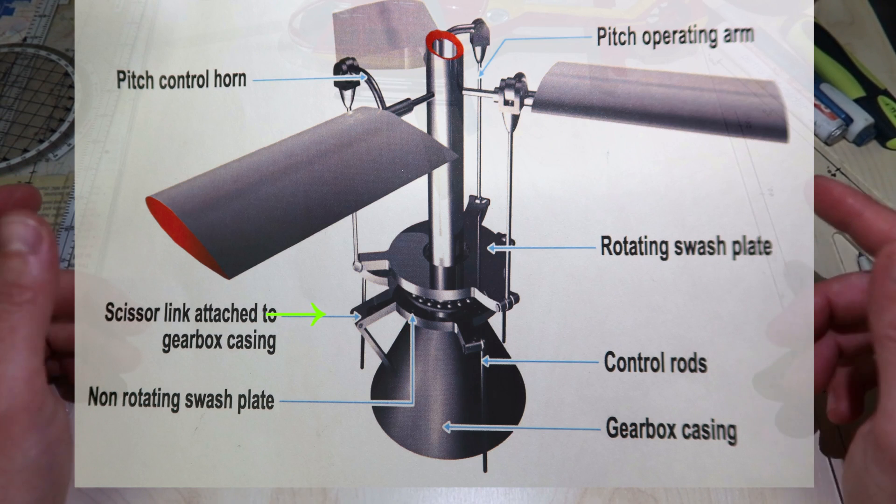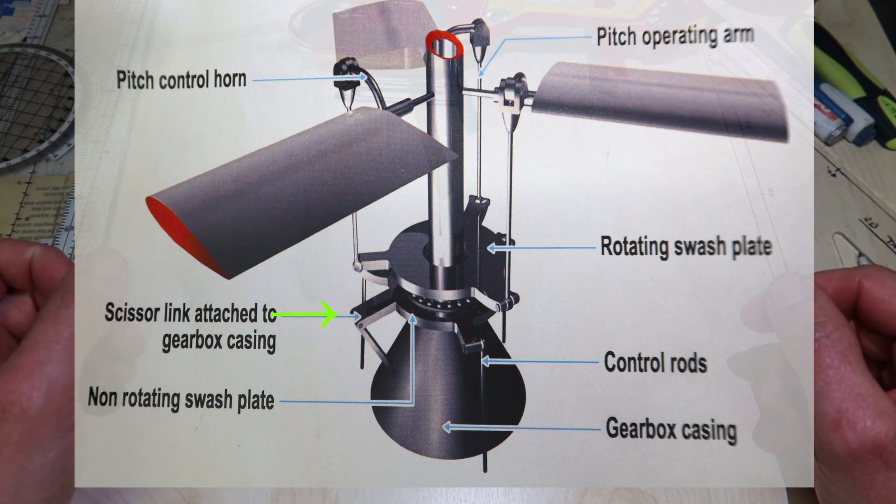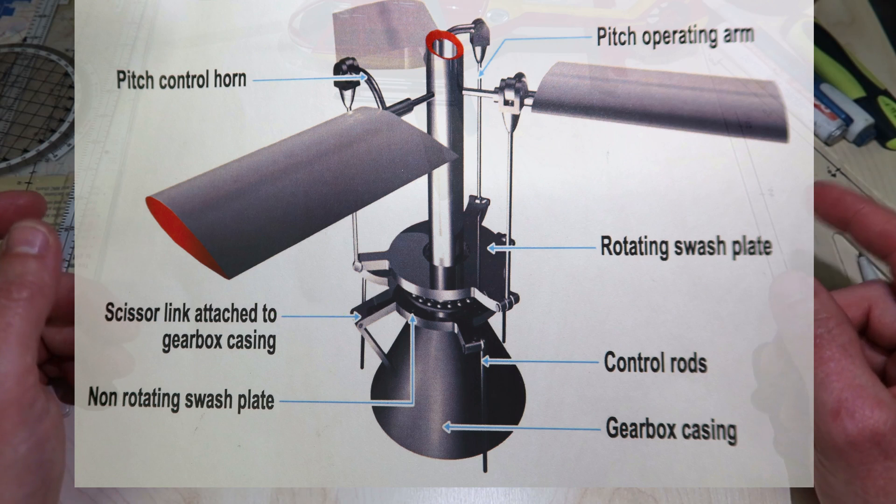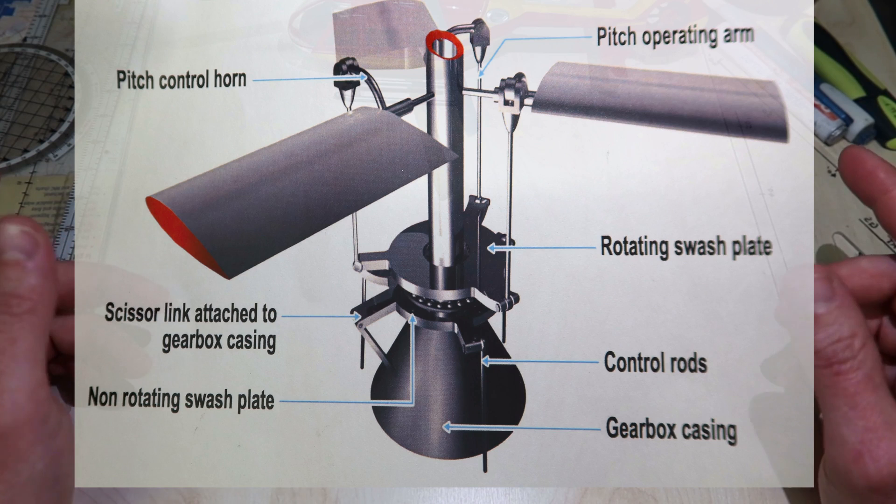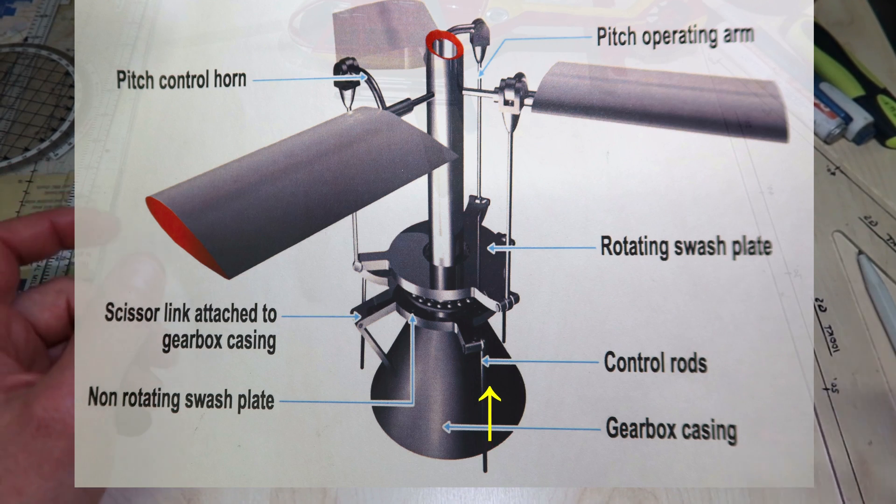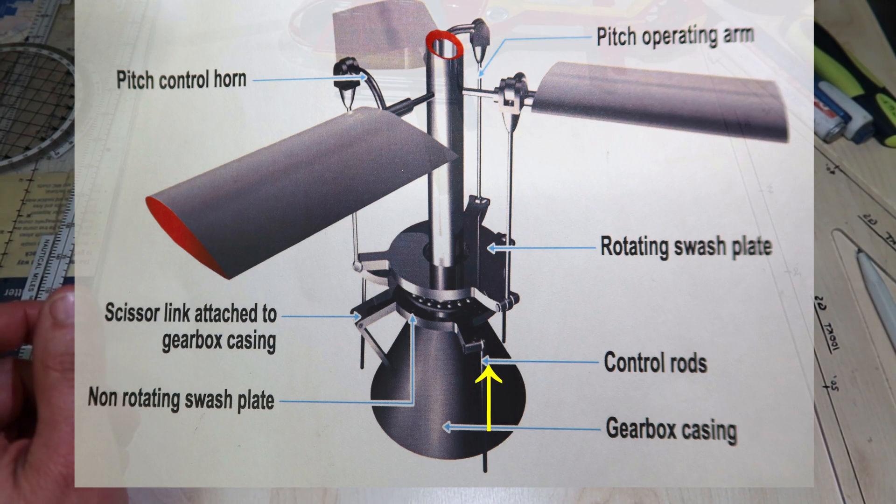Depending on their movement, they can force the non-rotating swash plate to tilt and/or move up and down. On simple helicopters, the control rods are directly attached to the swash plate. On more sophisticated designs, the rods are operated hydraulically.